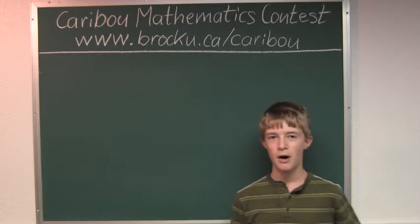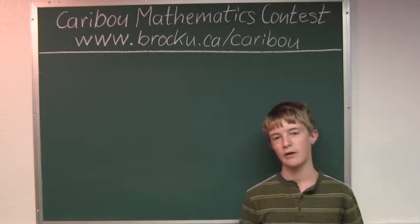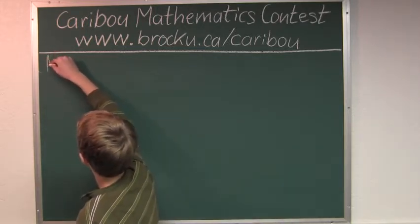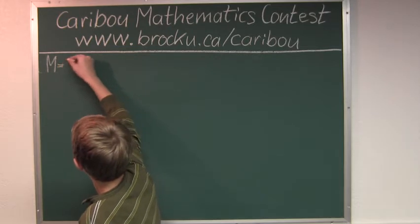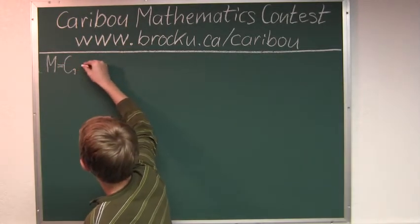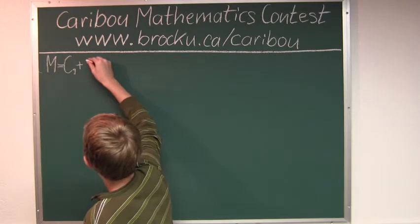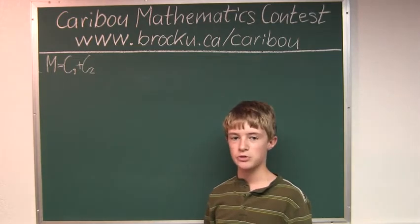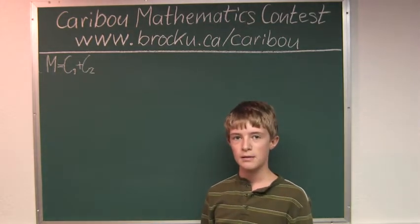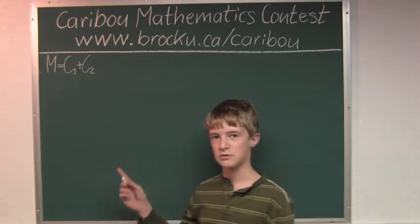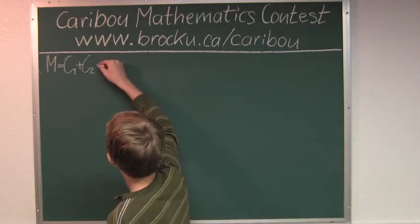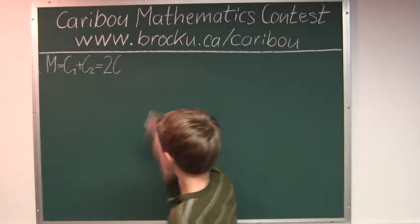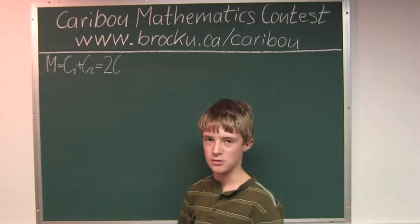So, Ma bean ate the same number of beans as child 1 and child 2 together. And since both of the children eat the same together as Ma, that would be 2C. And that also means that M has to be even.